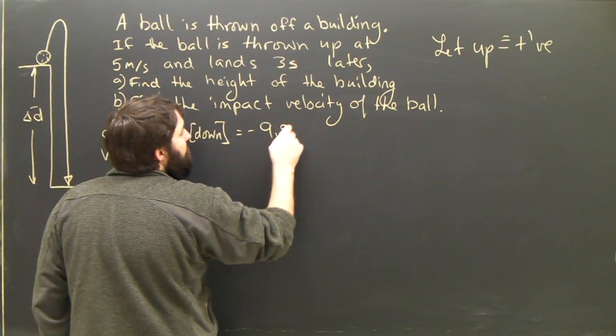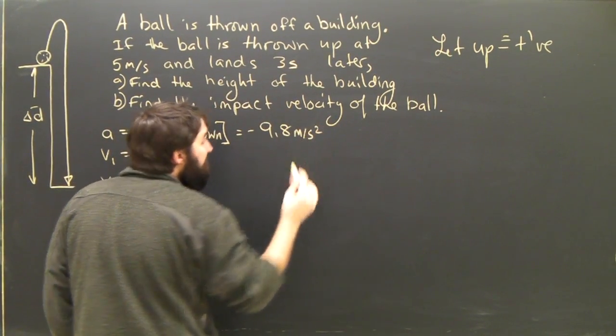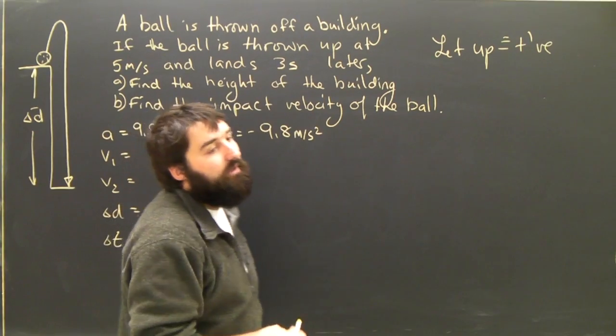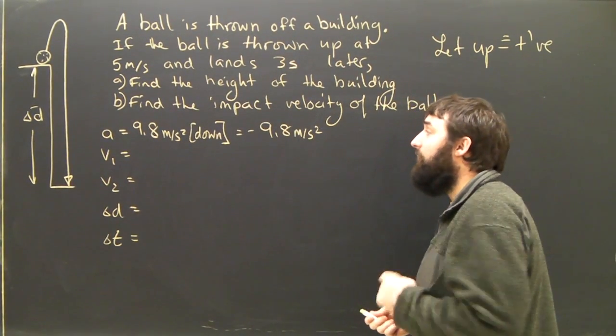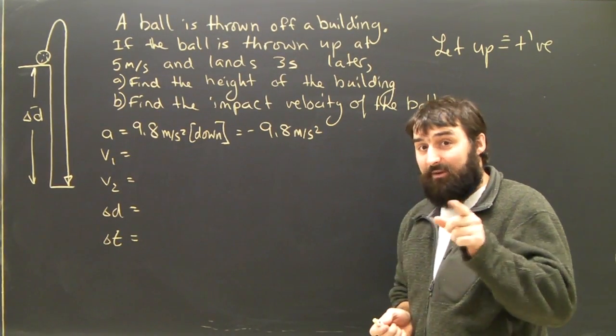hopefully, you can see why in this case, A should be negative 9.8. But A is not always negative 9.8. It's always 9.8 down. Whether it's positive or negative depends on you.